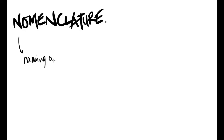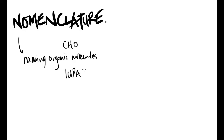Nomenclature is essentially the naming of organic molecules — things that contain carbon, hydrogen, and oxygen mainly. It's governed by IUPAC, the International Union of Pure and Applied Chemists, and it's a way of naming things so that no matter where you go, you would always have the same name for molecules. There are still common names — ethanoic acid is often called acetic acid — but those common names differ from place to place, so IUPAC naming is intended to be truly international.